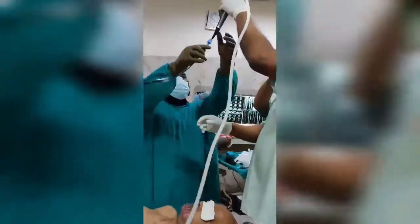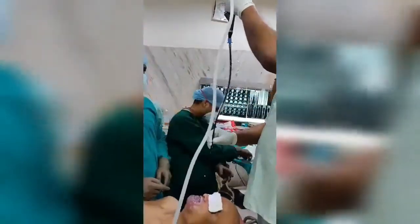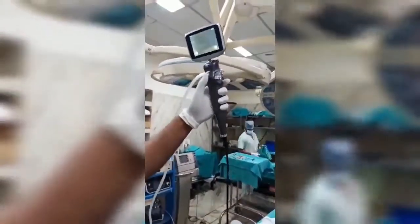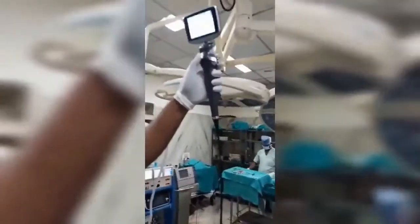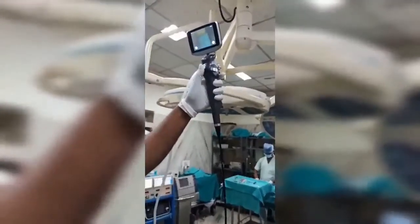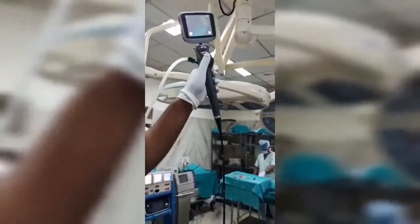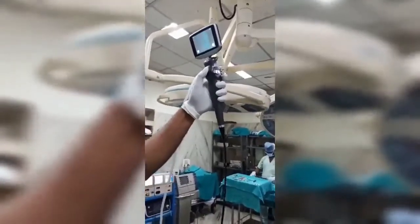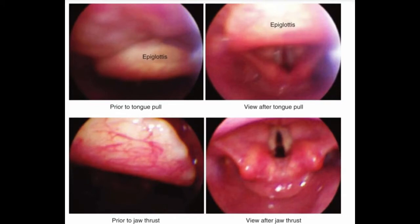The preselected endotracheal tube, usually about 1 to 1.5 sizes smaller than the expected tube for normal direct laryngoscopy intubation, is loaded onto the fiber optic scope. The scope is lubricated with lignocaine jelly, ensuring the jelly does not reach the tip, which may cause blurring of vision. Regarding lever movements: moving the lever down moves the tip up, and moving the lever up moves the tip down; side-to-side movement is accomplished by rotation of the body of the bronchoscope. In cases of non-visualization of the vocal cords, glottic structures can be visualized using tongue pull and jaw thrust.